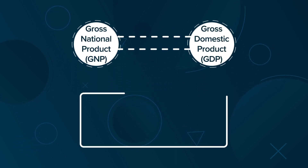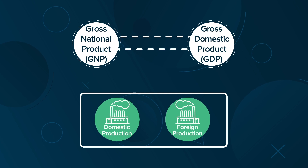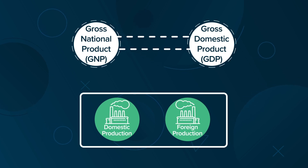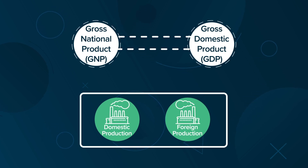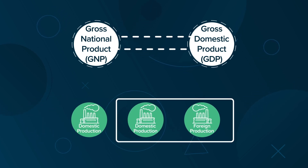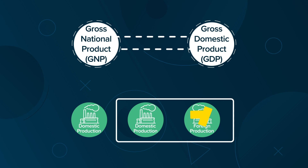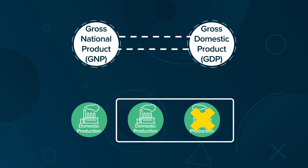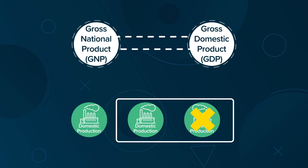However, GDP is a measure of all production activity within the borders of a country, whereas GNP is a measurement of all production activity by a country's citizens and domestic-owned businesses.